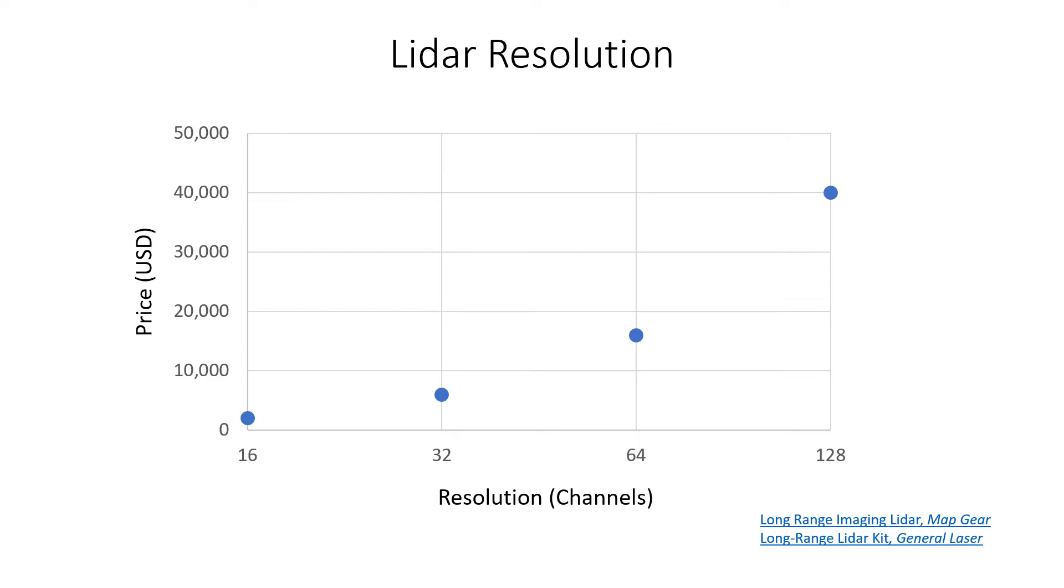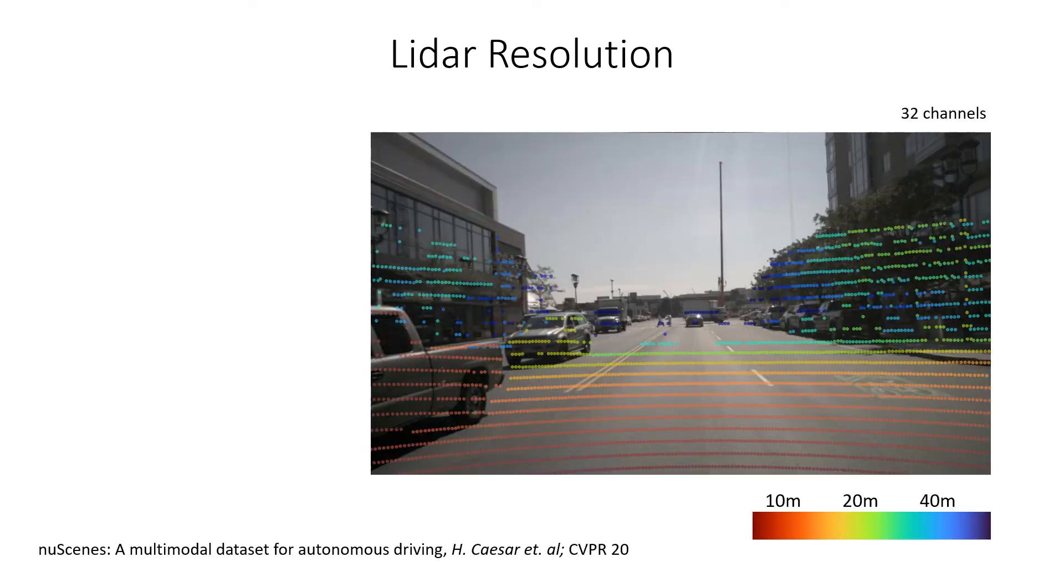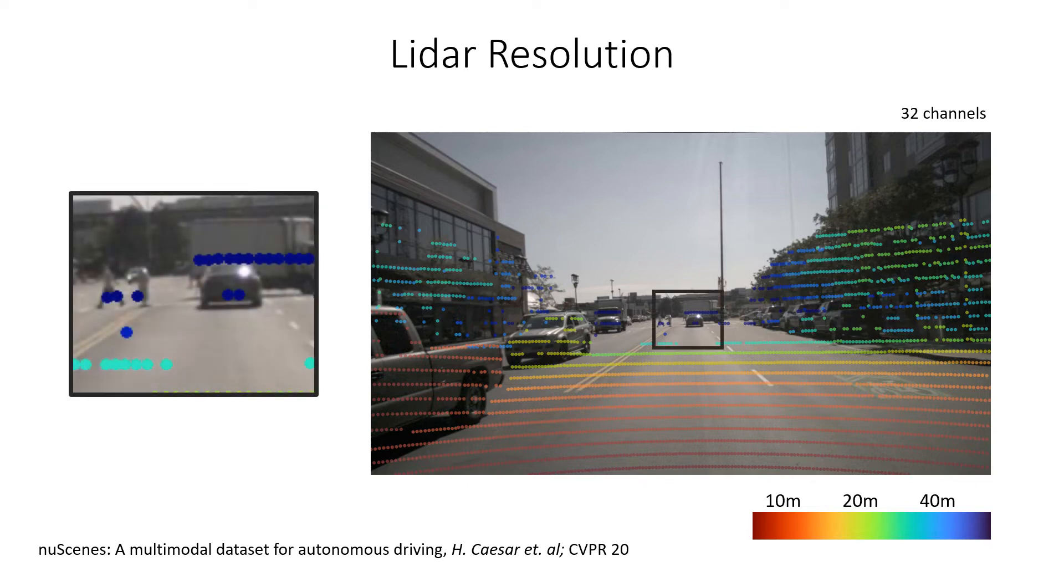And even if price isn't a factor, the best LiDAR sensor that money can buy today has 128 channels, which is just slightly above the resolution of the first digital cameras back in the 70s. And if we compare LiDAR scan and camera image side by side, we can really see the differences in resolution, especially for objects further in the scene.